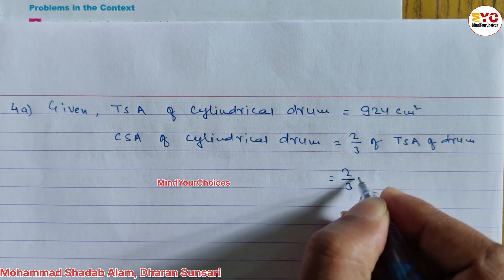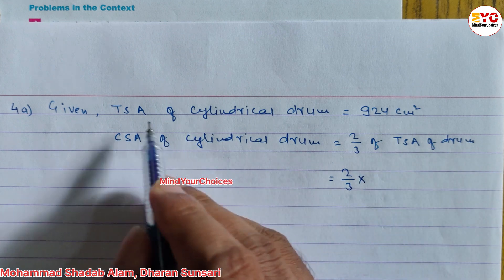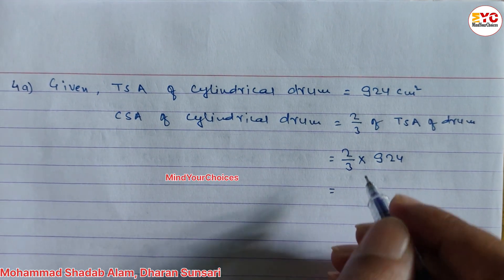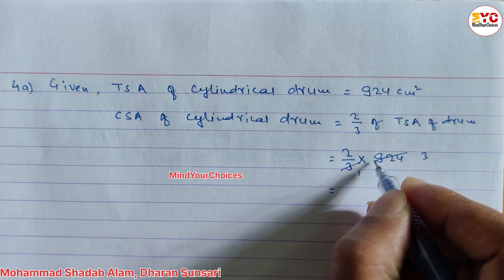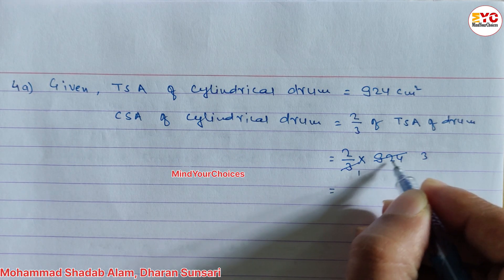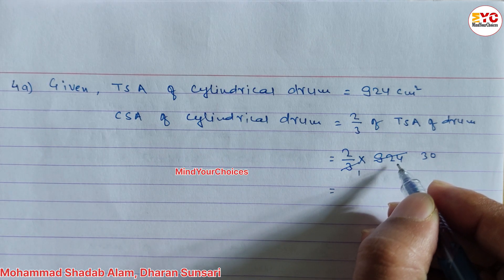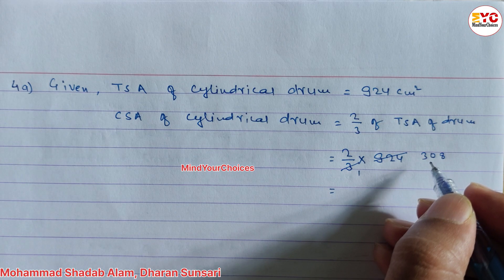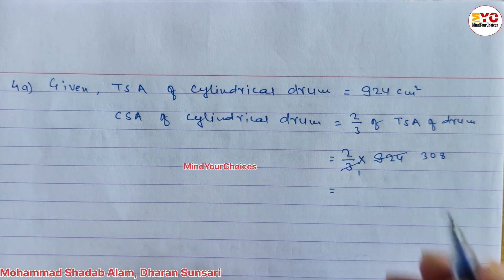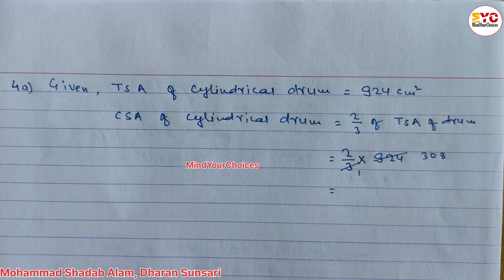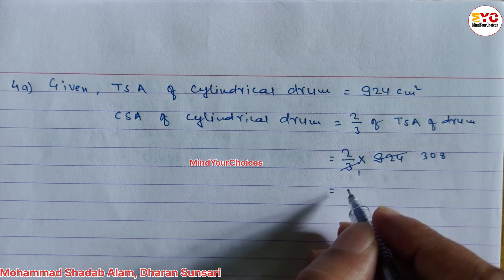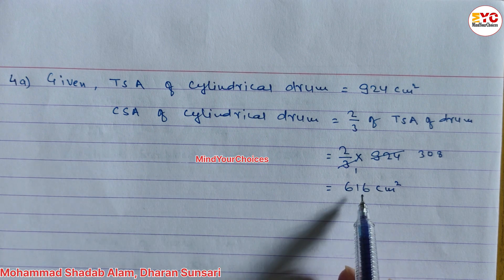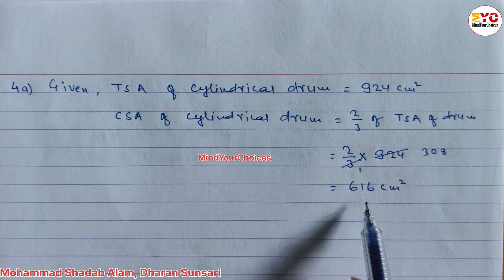CSA = 2/3 × TSA. Since TSA is equal to 924, we write 2/3 × 924. Calculating: 924 divided by 3 is 308, and 308 × 2 gives us 616. So the curved surface area is 616 cm².